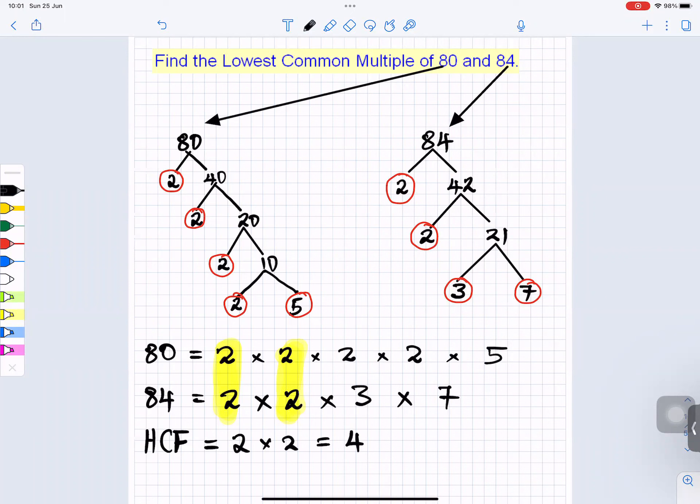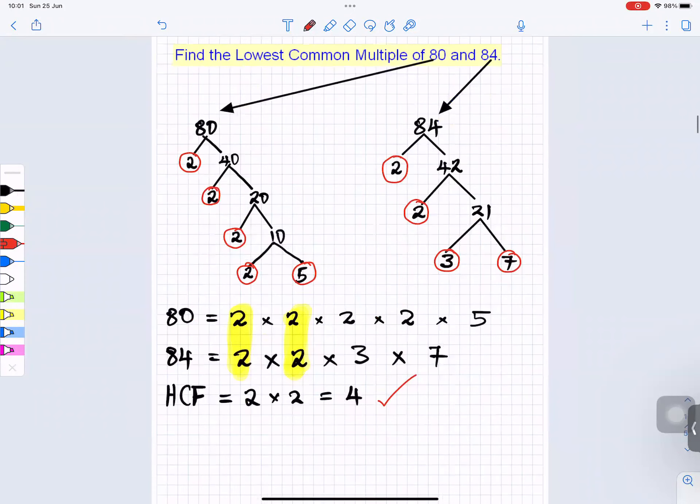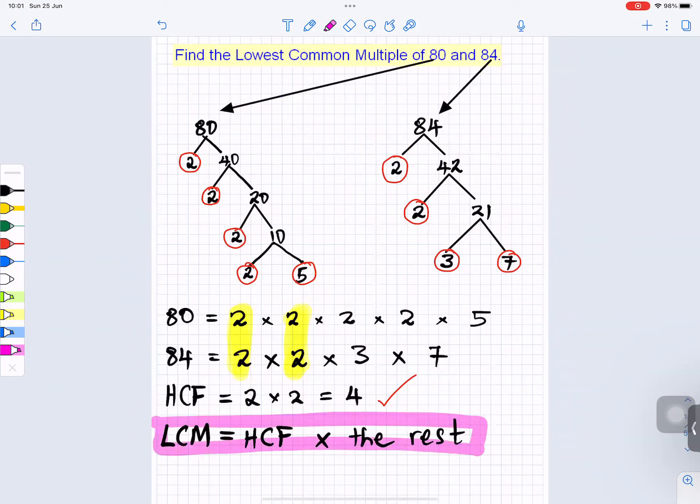Now the next thing I want to find is what they call the LCM, the lowest common multiple. The formula for lowest common multiple is multiply the highest common factor times the rest. Now this formula you must remember. That's why I highlighted in pink. You must remember it. That means the highlight means you must memorize it.